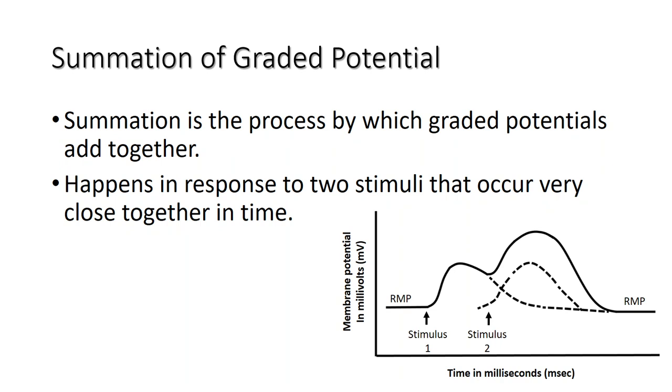As shown in the diagram, summation of two depolarizing graded potentials is happening in response to two stimuli of the same strength that occur very close together in time. The dotted lines represent the individual depolarizing graded potentials that would form if summation did not occur.